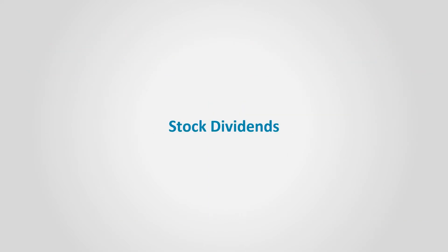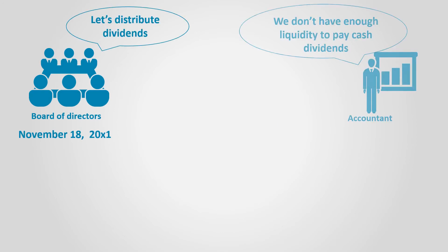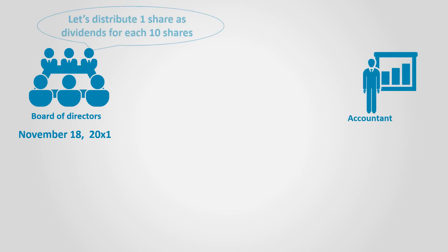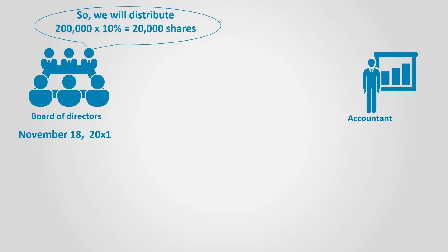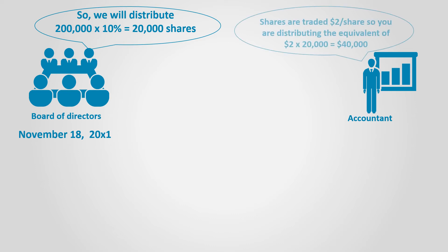Now, let's speak about stock dividends. If the board of directors is willing to distribute dividends but there is no liquidity to pay in cash, they might think of distributing the dividends in the form of shares. Sometimes, even if there is liquidity, they may want to retain cash to grow the business as against borrowing funds from a lending institution after paying out dividends. Let's assume the board of directors decided to distribute 10% stock dividends, so they will distribute 20,000 shares. This number is calculated by multiplying 200,000 shares by 10%. Let's also assume that the share is currently traded for $2 per share in the marketplace, implying the business will distribute the equivalent of $40,000 as dividends in the form of shares.